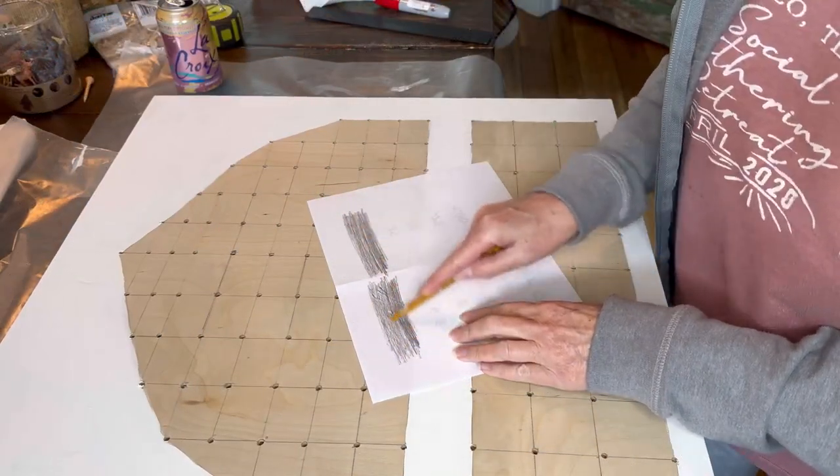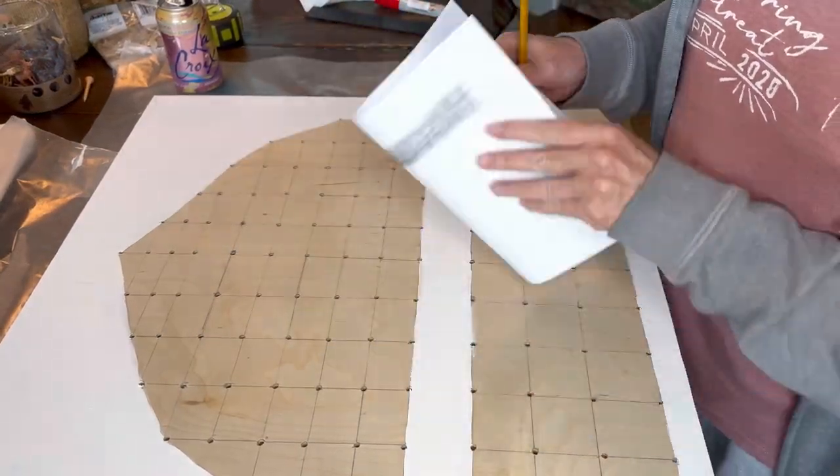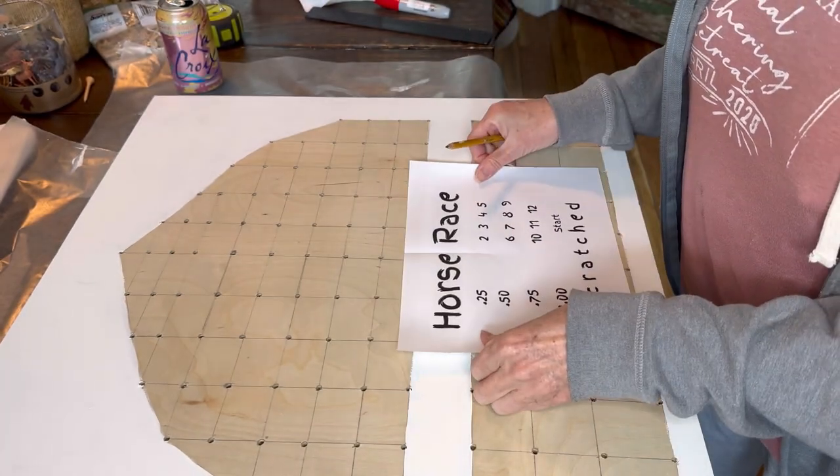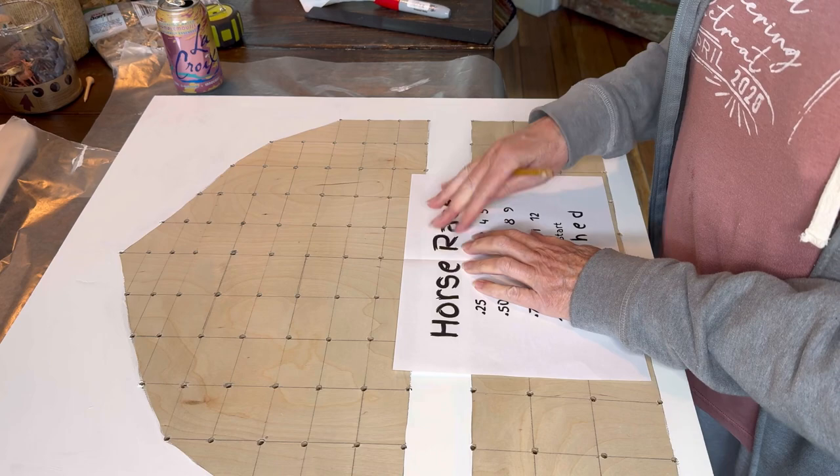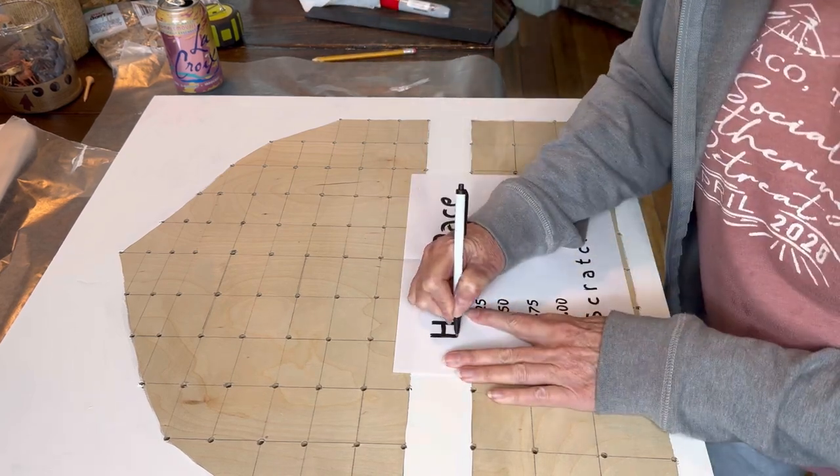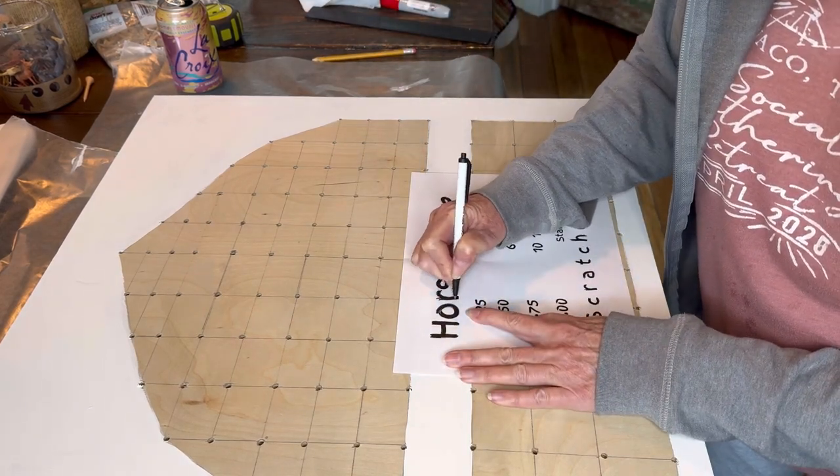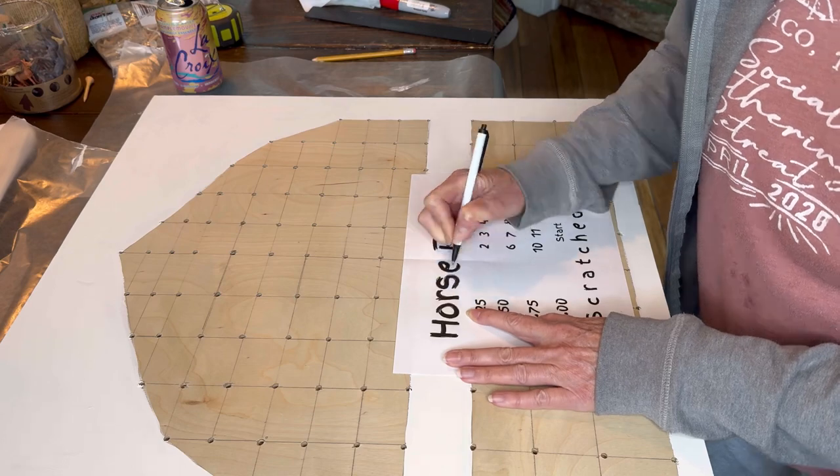The graphics, you just print them off on copy paper and then take a number two pencil and color the backside of your graphic. Then use an ink pen to trace that onto your board.